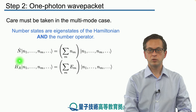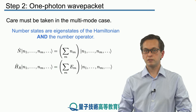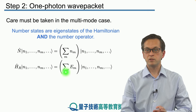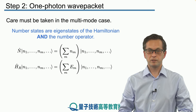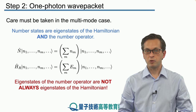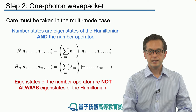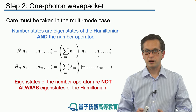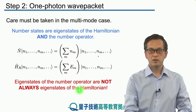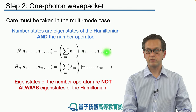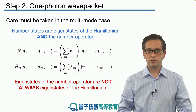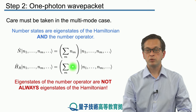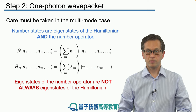The total Hamiltonian of the radiation field applied to the number state is given by the sum of the individual eigenvalues — the individual energies for every mode M — times the number state. However, the following statement is more tricky: eigenstates of the number operator are not always eigenstates of the Hamiltonian. There are eigenstates which satisfy the first eigenvalue equation but will not satisfy the second. Let's see an example of that.